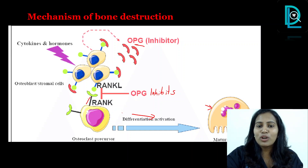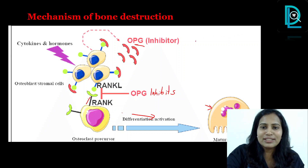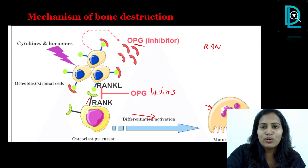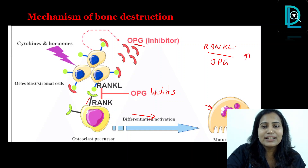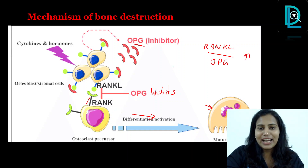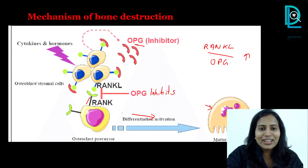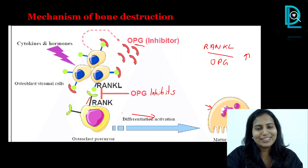At sites of active periodontal destruction, the RANK-L to OPG ratio will be higher, meaning RANK-L is expressed more — that itself is another MCQ. So be very thorough with this mechanism; it is very very important.